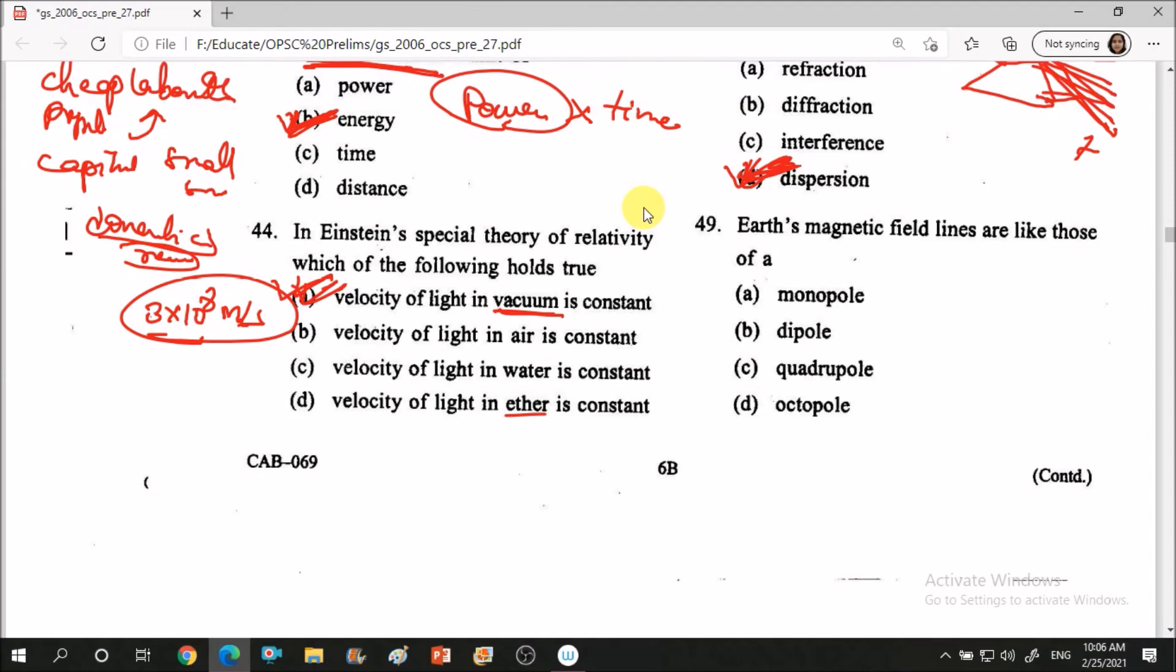Next question: Earth's magnetic field lines are like those of a dash. If we see earth, this is north pole and this is south pole. But earth works like a bar magnet such that where south pole is, that becomes magnet's north pole. Where north pole is, that becomes magnet's south pole. Exactly opposite poles. Where earth's geometric north is, that is magnetic south. Where earth's geometric south is, that is magnetic north. If we see, basically it is a dipole. Earth's magnetic field lines are like that of a dipole.